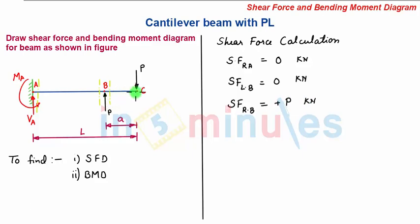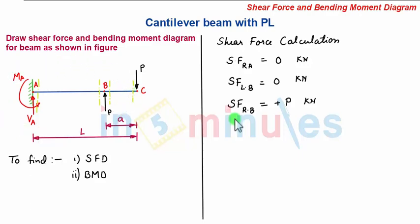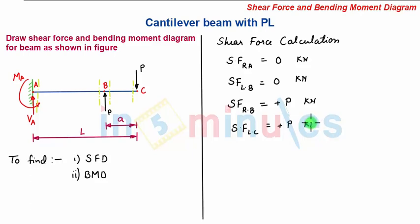Now we move the section towards point C, taking a section towards the left of C and very near to it. By looking at the left hand side of the section, the shear force to the left of C is plus P kN, since no force is acting between these two sections.